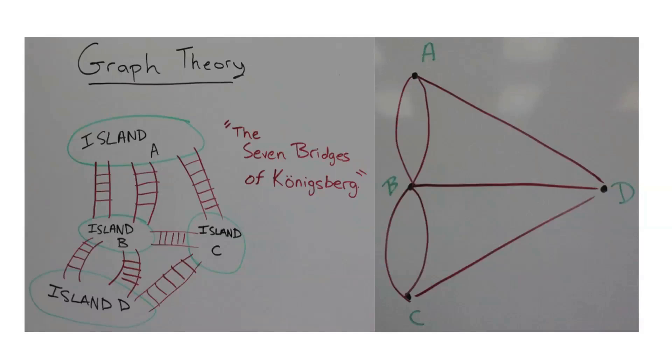Another lesson we taught was on graph theory. We began by giving the students probably the most famous problem in graph theory: the Seven Bridges of Königsberg. This problem has no solution, but we didn't tell them that. After having them work it out in groups and trying to solve it, even to the point of frustration — not the nice type of frustration — we moved on.